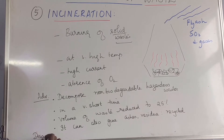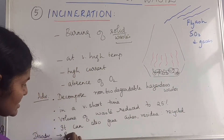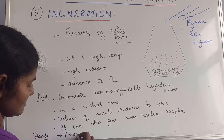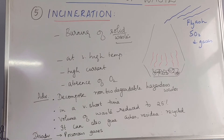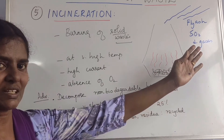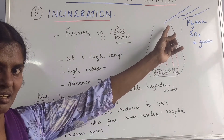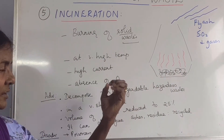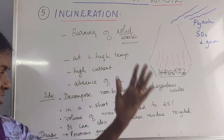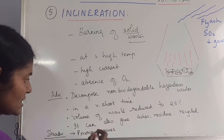The disadvantages are: the first one is all this fly ash and other poisonous gases. But if there is a problem, there is a solution. If all these are coming out, we can always have filters like precipitators that would absorb the fly ash and the poisonous gases and only let out the non-poisonous gases. So that is also possible.